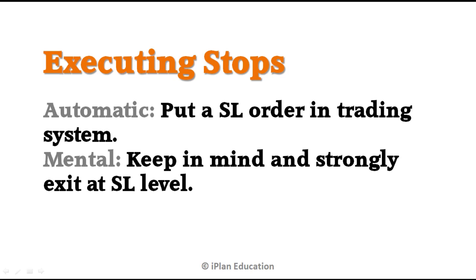How do you execute stops? There are two major ways. One is automatic — you put a stop loss order in the trading system and when the price limit is reached, your trading software places an order into the exchange and your position is closed. Another one is a manual stop loss — you keep the level in your mind and then feed the data manually into the trading system. Normally, if you are trading intraday or doing scalping, you should use automatic stops. When you are investing long term, you don't have to use automatic stops.